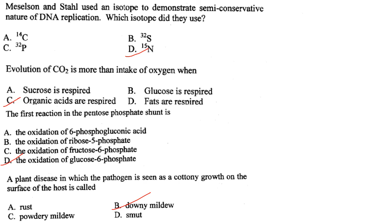A plant disease in which the pathogen is seen as a cottony growth on the surface of the host is called downy mildew. Answer is option B.